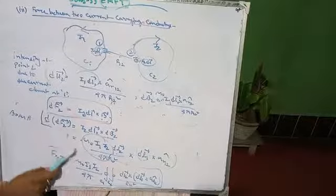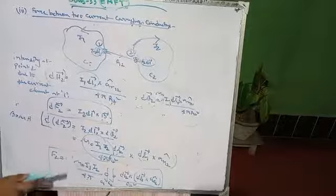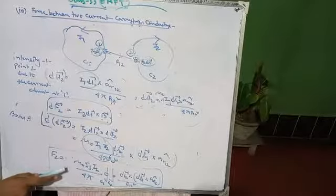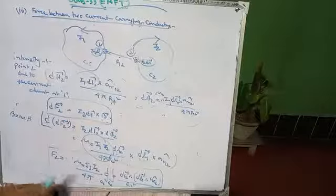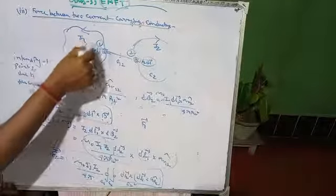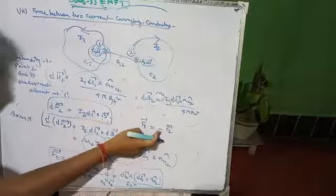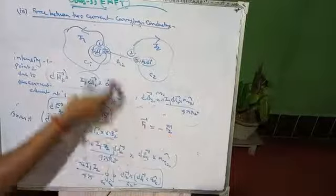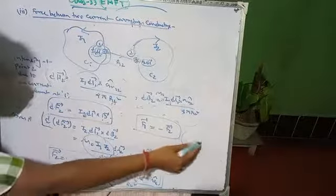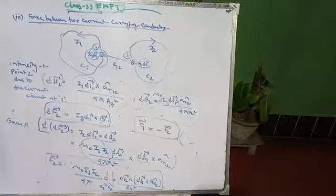This equation is essentially the law of force between two current elements, known as Ampere's force law, and is analogous to Coulomb's law. The force F1 on the first element equals negative F2 — same magnitude, opposite direction — which is in accordance with Newton's third law.